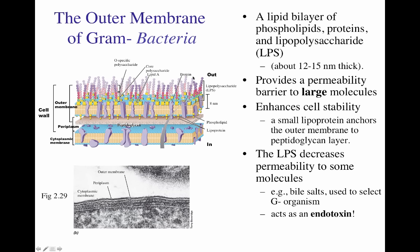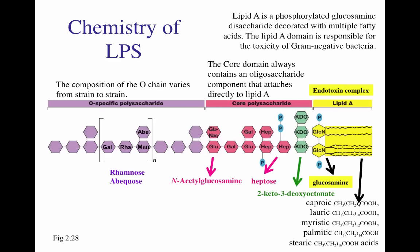The LPS molecule layer on the outer membrane decreases the permeability of many molecules, for example bile salts. Bile salts are therefore used to reduce the cell growth of gram-positive microorganisms because they can permeate them very nicely — so only gram-negative microorganisms can grow in the presence of bile salts. It is also the endotoxin of gram-negative bacteria, and the immune system of many people forms a very strong reaction against the lipid A of the lipopolysaccharide.